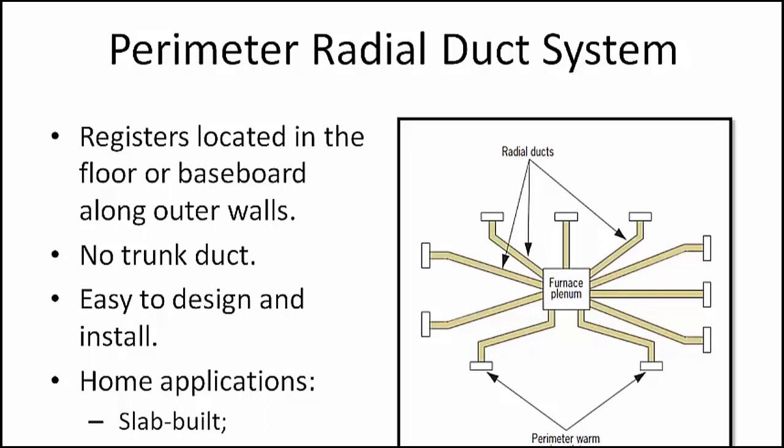The registers in the perimeter radial duct arrangement are located in the floor or in the baseboard along the outer walls. This system is simpler than the perimeter loop system — there is no perimeter loop duct, and the registers are fed directly from the ducts connected to the subfloor plenum. This arrangement has been used for homes built on concrete slabs as well as for homes built over crawl spaces or basements. In homes built on concrete slabs, the perimeter loop duct system provides more uniform floor temperatures, especially in cold climates. The perimeter radial duct arrangement can also be used for summer cooling. This system can be called an individual duct system since no trunk duct is involved. It is one of the easiest systems to design and install, but can prove to be more expensive than using a trunk duct, unless you are using flex duct.